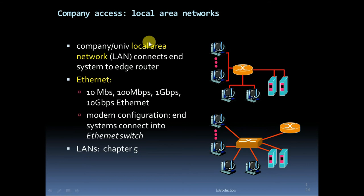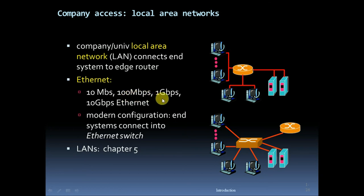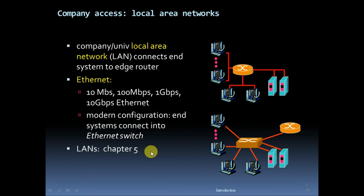Local Area Networks (LAN): a company or university local area network connects end systems to an edge router. Ethernet speeds include 10 Mbps, 100 Mbps, 1 Gbps, and 10 Gbps. In a modern Ethernet configuration, end systems connect into an Ethernet switch. We will study more about LAN in Chapter 5.